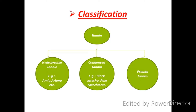About classifications, tannins are mainly classified into three types: hydrolyzable tannins, condensed tannins, and pseudotannins. The example of hydrolyzable tannin is amla, arjuna, etc. The example of condensed tannin is black catechu and pale catechu.